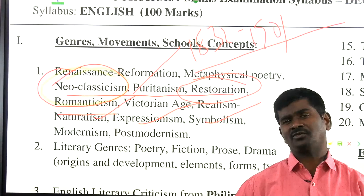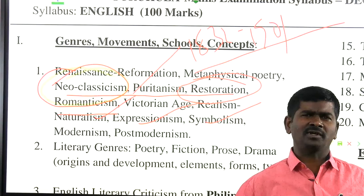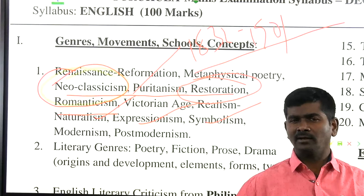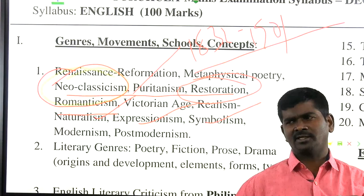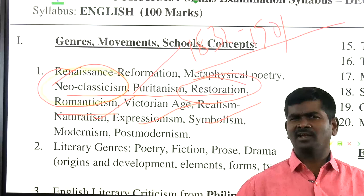Bloomsbury Group: Virginia Woolf, E.M. Forster, Clive Bell, Lytton Strachey, Roger Fry, and John Maynard Keynes. Stream of consciousness novel: May Sinclair, Dorothy Richardson, Virginia Woolf, James Joyce, etc. Magic realism: Jorge Luis Borges, Gabriel García Márquez, Italo Calvino, Isabel Allende, John Fowles, Salman Rushdie — connected to magic realism.